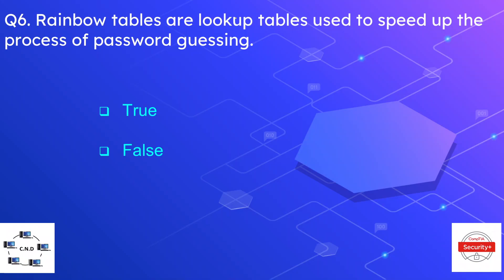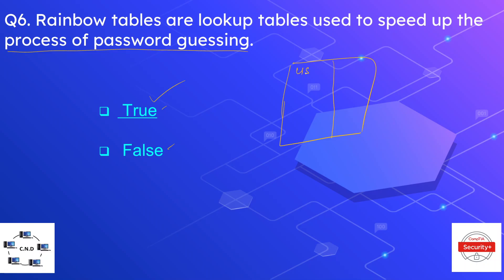Question number six: rainbow tables are lookup tables used to speed up the process of password guessing — true or false? The correct option is true. Rainbow tables are lookup tables that contain passwords and their corresponding hashes. For example, a password like 'user1' paired with its hash, or '123ab6' paired with hash '16ab6'. This is used to speed up the process of password guessing.